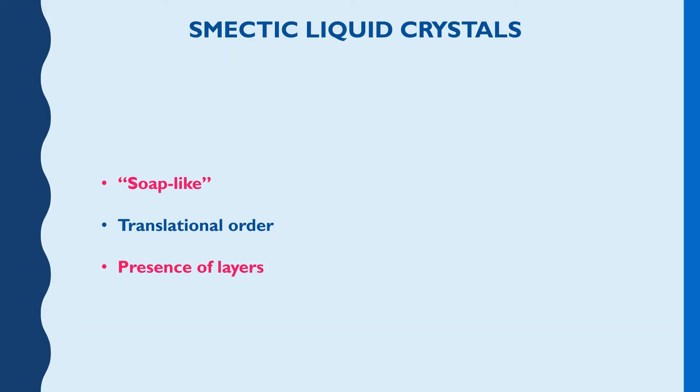Here, the molecules are arranged in equidistant planes. Thus, we can say that the smectic liquid crystals possess some amount of positional order since the molecules remain in their respective layers. Also, it possess orientational order just because the molecules remain aligned in their direction. These layers can actually slide over one another due to which the smectic liquid crystals are said to possess this soap-like touch.